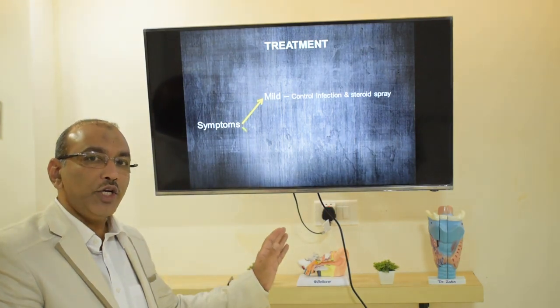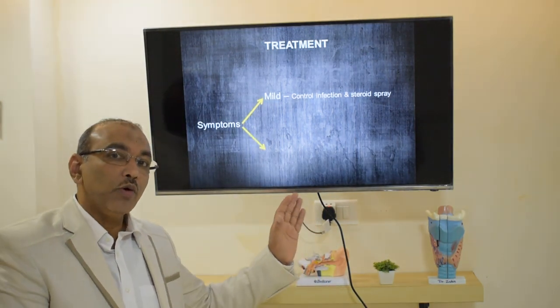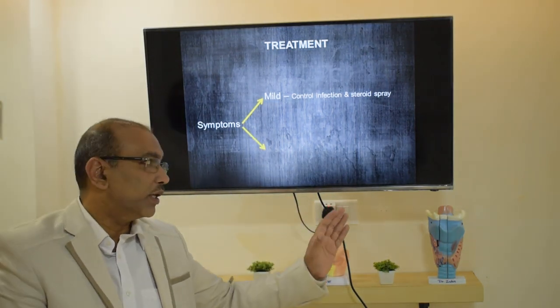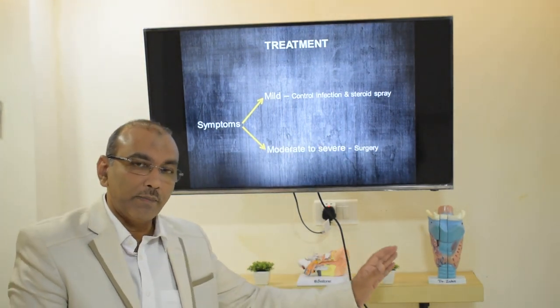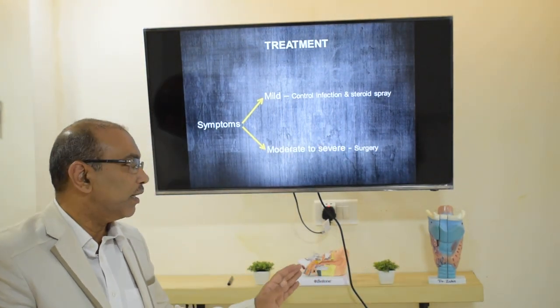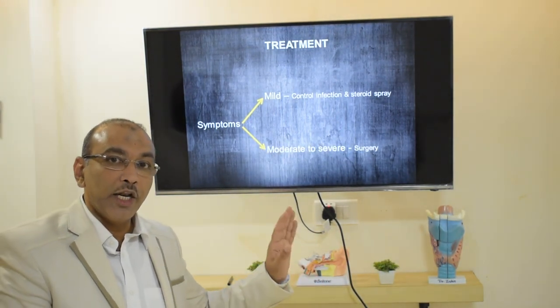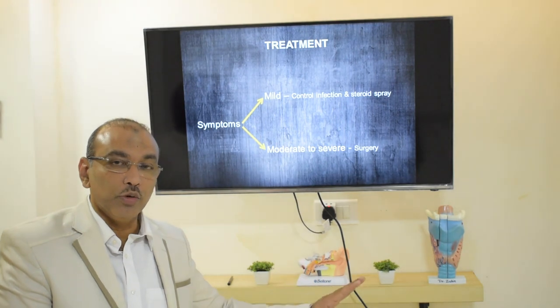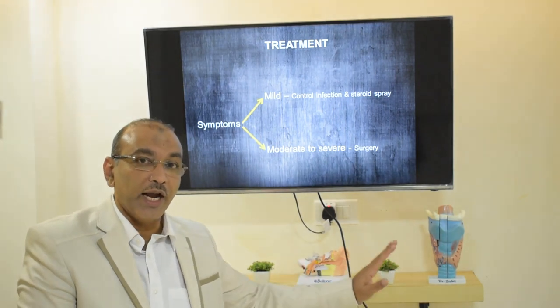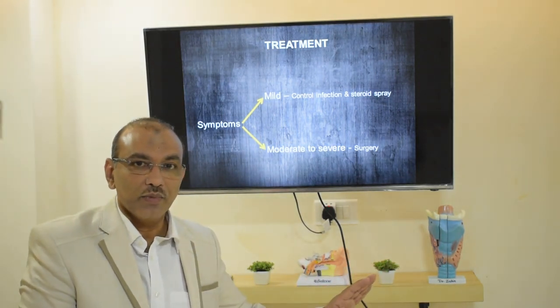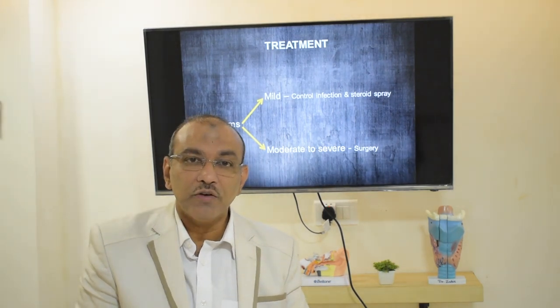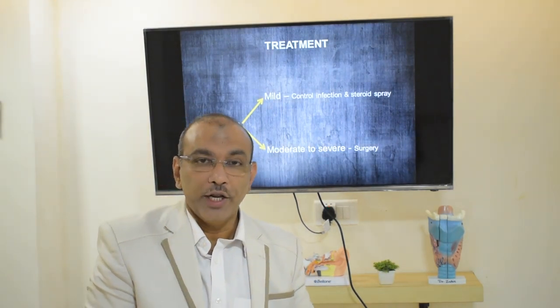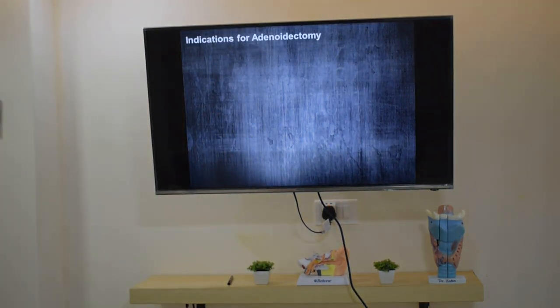In moderate-to-severe cases, where there is more than 75 percent obstruction of the nasopharynx and many associated complaints, the only treatment is surgical removal of the adenoid — adenoidectomy has to be done.